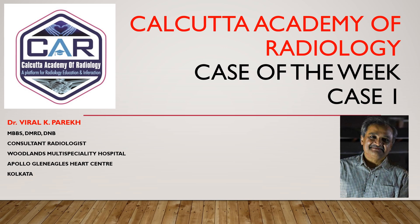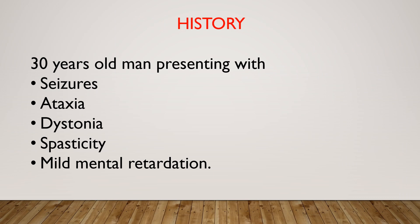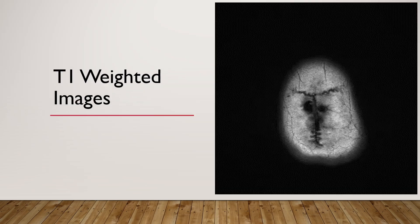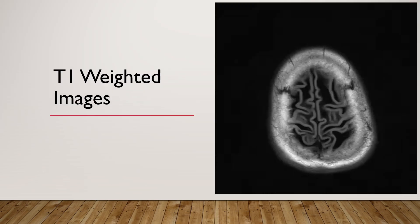Here is a 30-year-old man presenting with seizures, ataxia, dystonia, spasticity, and mild mental retardation. An MRI of the brain was done. Here are the T1-weighted images.